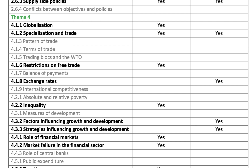When it comes to theme four — essentially year 13 economics for many students — globalisation is in for paper two but not for paper three. Specialisation and trade, the economics of specialisation and trade, theories of comparative advantage, and absolute advantage are included for paper two and paper three. They've taken out patterns of trade, terms of trade, and trading blocs and the World Trade Organisation — things like customs unions and free trade areas. Although understanding the shift towards regionalisation and regional trade agreements, like the African Continental Free Trade Agreement, gives you evaluative insight into where globalisation is heading.